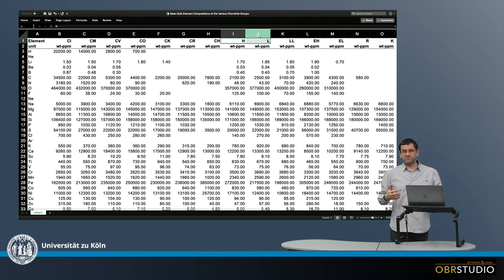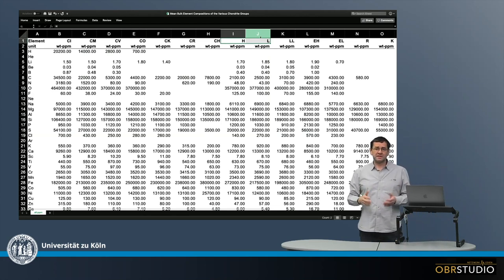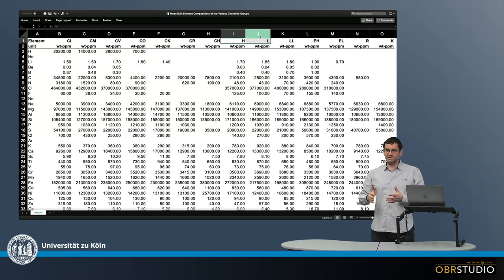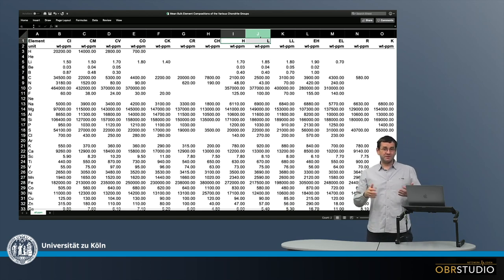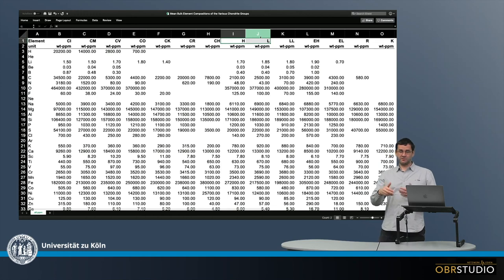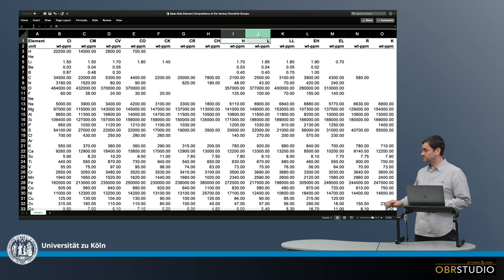Now the unit is always the same, it's always weight ppm. And this is quite convenient for calculations, because if we do some normalization, for example normalizing to magnesium or something like this, then if we divide silicon by magnesium and both have weight percent, then it's fine. But if we use zinc or indium, then zinc might be weight ppm and indium weight ppb and magnesium weight percent. And then if we divide these through each other, we get some problems with the units here. But if all are in the same, then there's no problem.